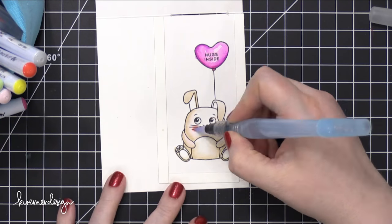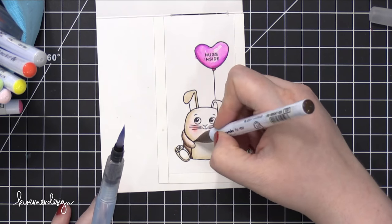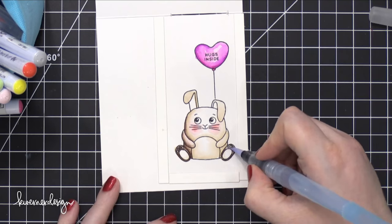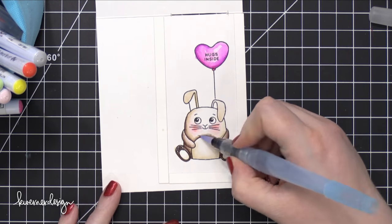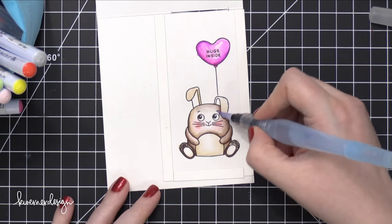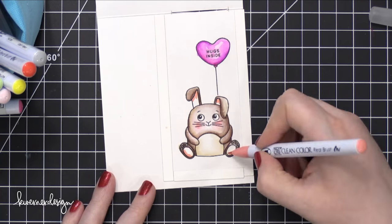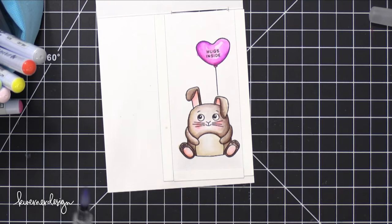I've tried using these markers on other papers, and it just doesn't work as well. I really struggle to get the colors to blend out and really move, but there's something about this Bristol paper—I think there's a little bit of a coating on it—that really helps the color sit on the top of the surface a little bit longer than other papers. So it gives you the time you need to really blend out those colors.